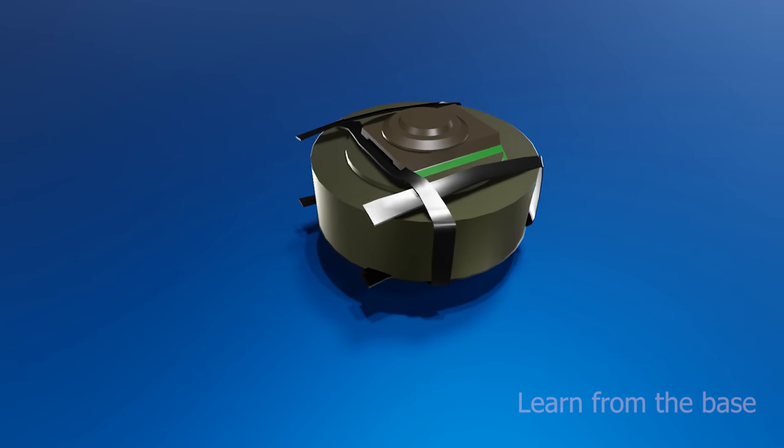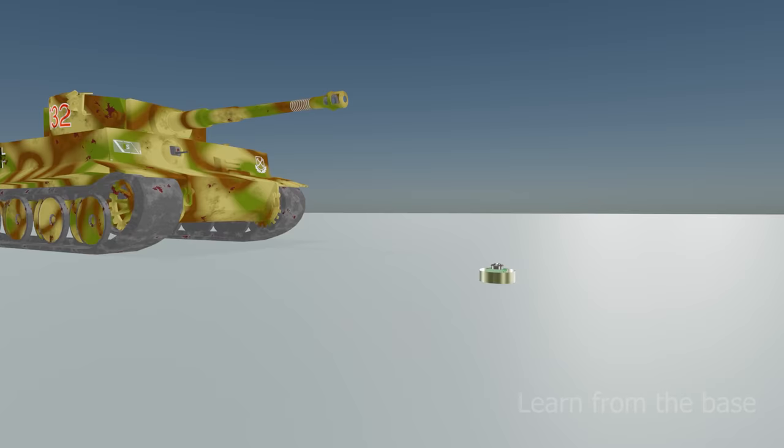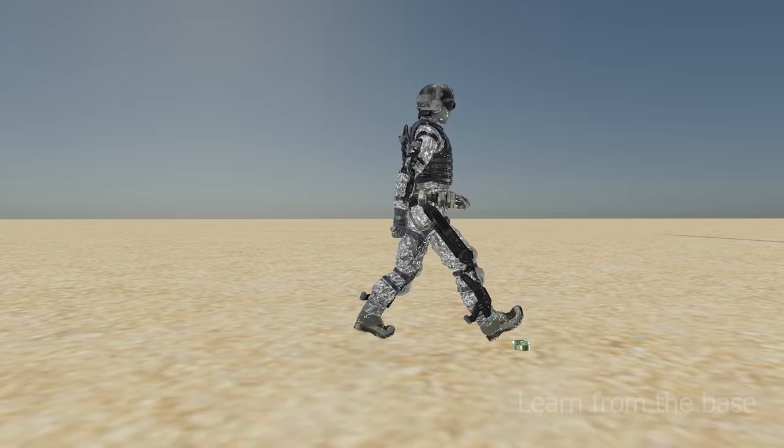A landmine is an explosive device concealed under the ground and designed to destroy enemy targets, ranging from combatants to vehicles and tanks as they pass over or near it.